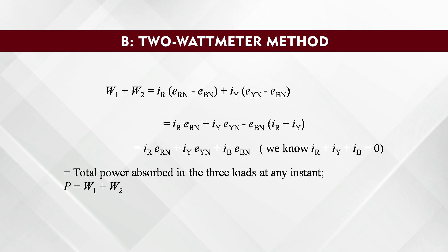Here, I_R·E_Rn is the power measured by the R phase, I_Y·E_Yn is the power measured by the Y phase, and I_B·E_Bn is the power measured by the B phase. That means these 2 wattmeters are giving a reading of all 3 phases. So, the total power absorbed in the 3 loads at any instant is P equal to W1 plus W2. This is how you can measure the 3-phase power by the 2-wattmeter method.